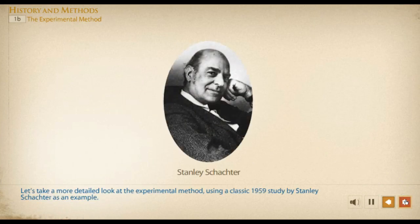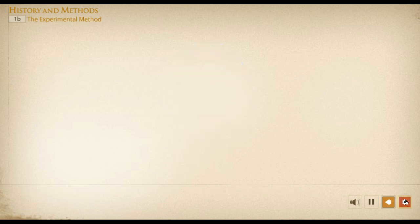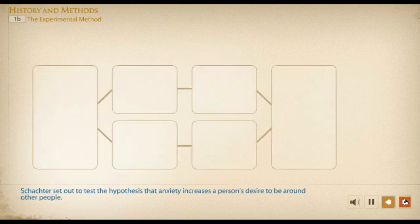Let's take a more detailed look at the experimental method using a classic 1959 study by Stanley Schachter as an example. Schachter set out to test the hypothesis that anxiety increases a person's desire to be around other people.